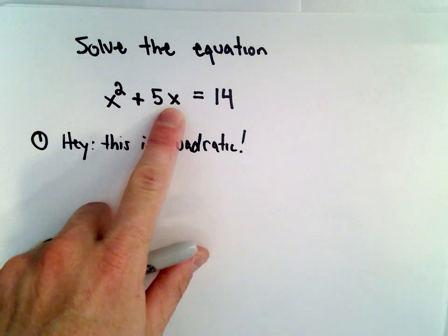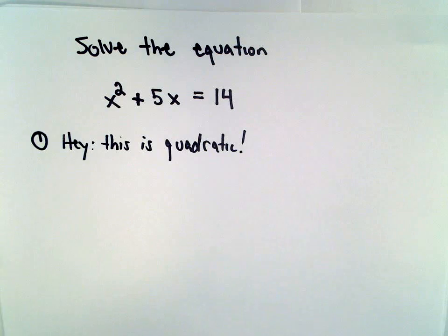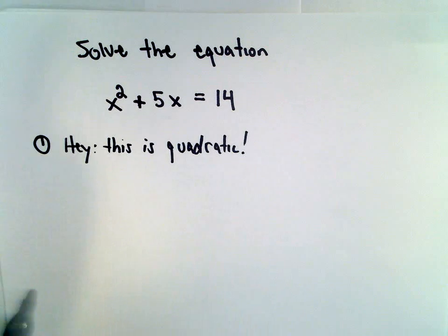There may or may not be a term involving x to the first power. In this case, there is. And there's also a constant floating around. So if I see those things and nothing else, I think that's going to be a quadratic equation.